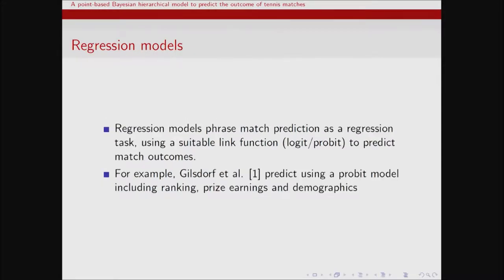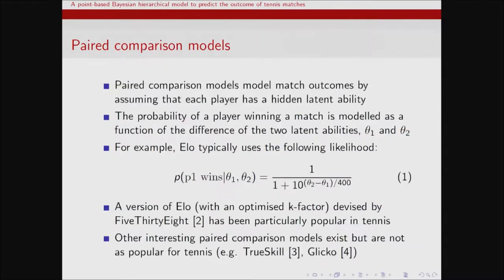Regression models are kind of what you'd expect. You phrase the match prediction problem as a regression task and use some kind of link function to predict the match outcome. Usually that's the probit in tennis, although you could use the logit as well. One example is Gilsdorf et al., who used a probit model which includes ranking, prize earnings, and demographics.